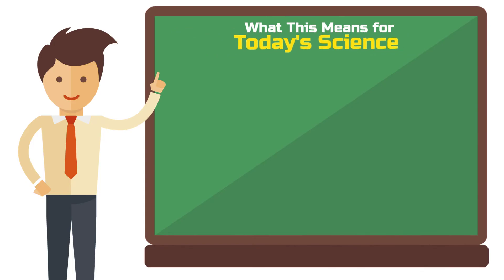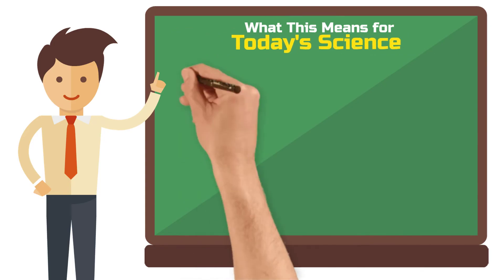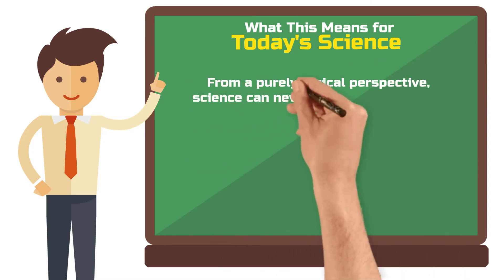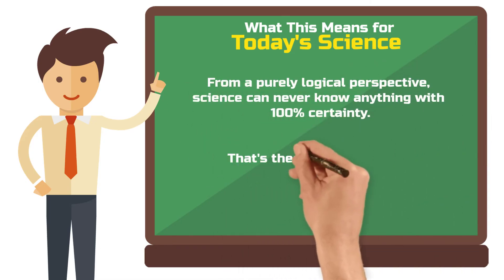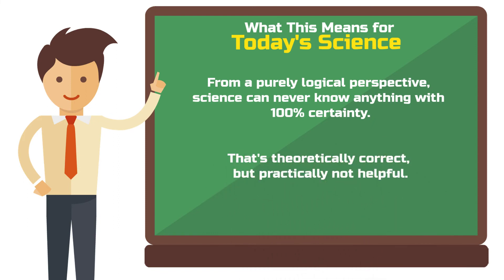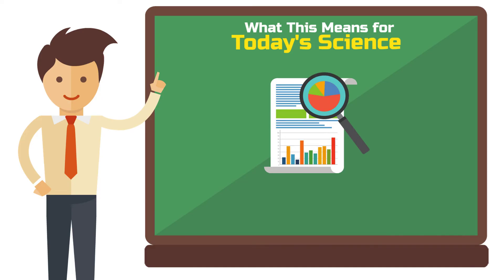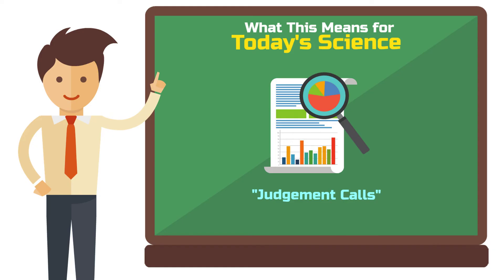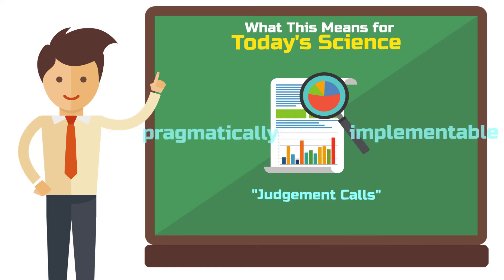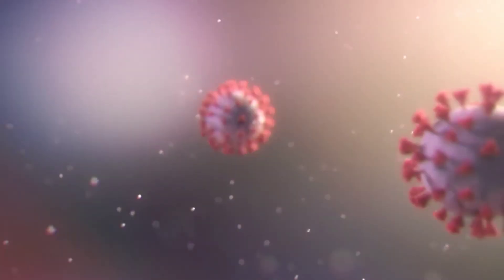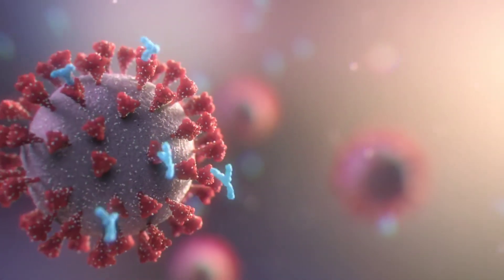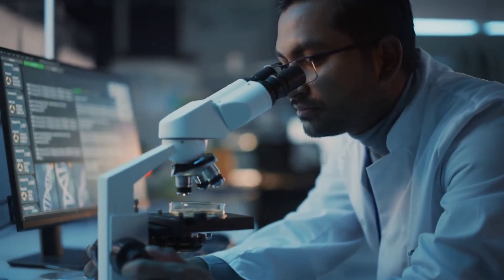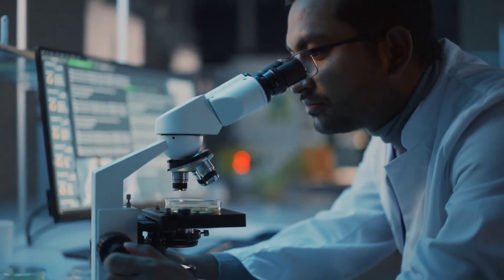This means the problem of induction remains unsolved to this day. Concluding from this that science can know nothing with 100% accuracy is theoretically correct, but not practically helpful. To better interpret the results of scientific studies, scientists must make a series of so-called judgment calls — these are the additional assumptions we must make for science to be pragmatically implementable. Everyone must define for themselves what they are willing to assume, even if there is no formal logical basis for it. As a scientist, you must therefore take a certain risk of being wrong, and you can decide for yourself how big that risk is.